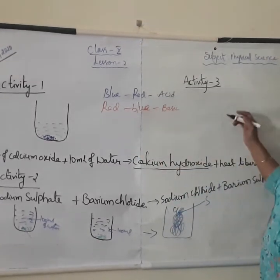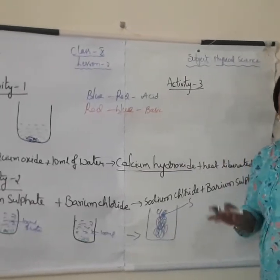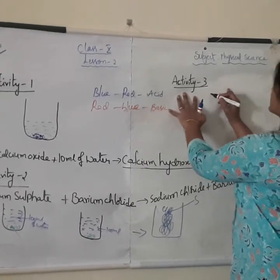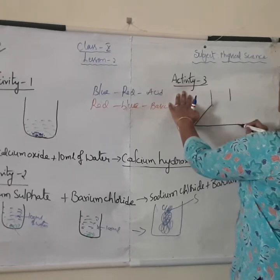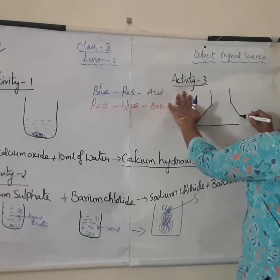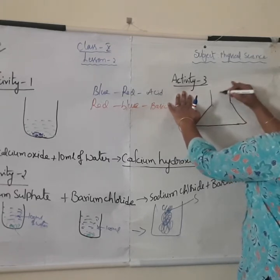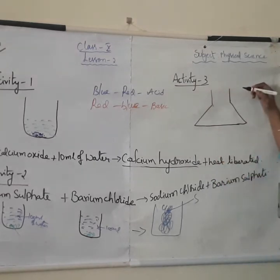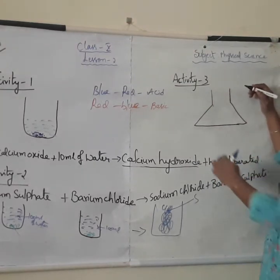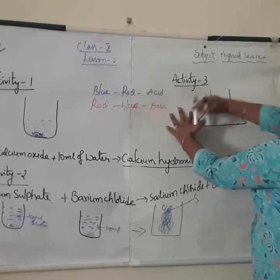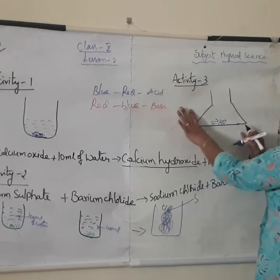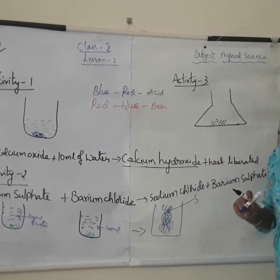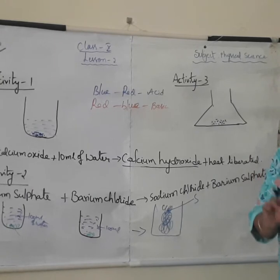Coming to activity 3. For this you have to take a conical flask — it is like a cone shape. In this conical flask, you take a few granules of zinc, and add dilute hydrochloric acid.